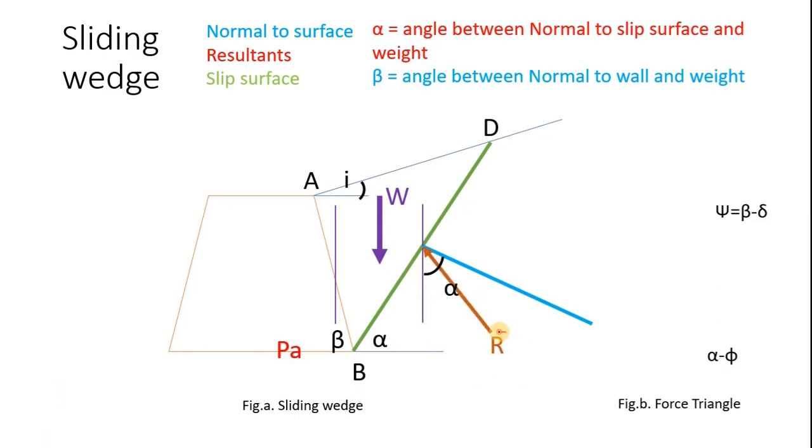Then R is the reaction on the slip surface, which is assumed to act at angle phi from the normal. Now draw normal to the wall at angle beta, and PA is the active earth pressure at angle delta to the wall.